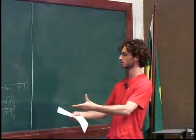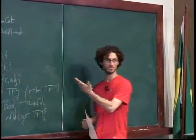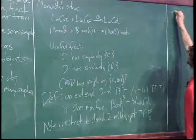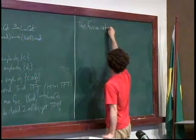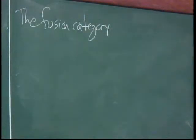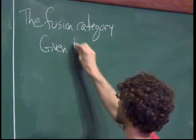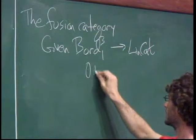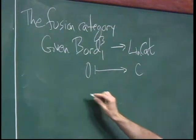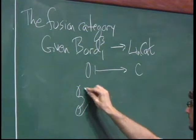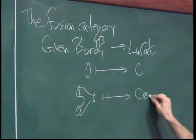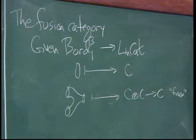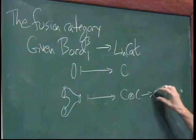Now suppose we have one of these extended TFTs. Let's do what we did for lower dimensions and study what kind of structure we get on the image of the circle — I'm going to call this the fusion category. The circle goes to some linear category C. And the pair of pants gives some map from C ⊗ C to C.